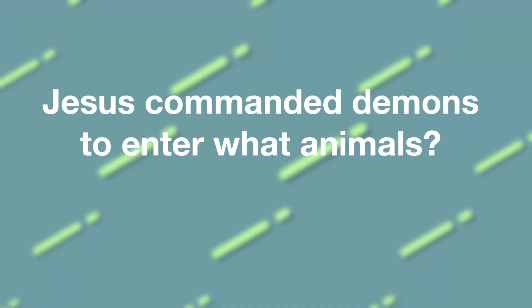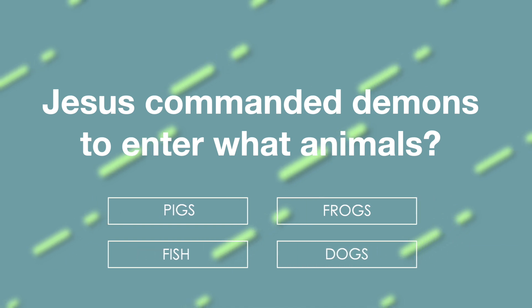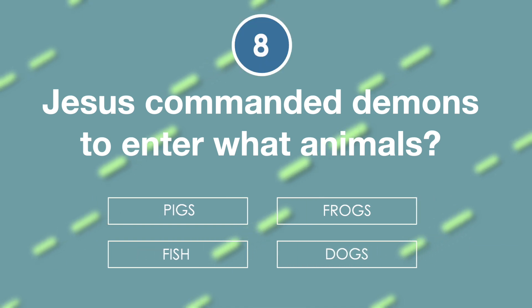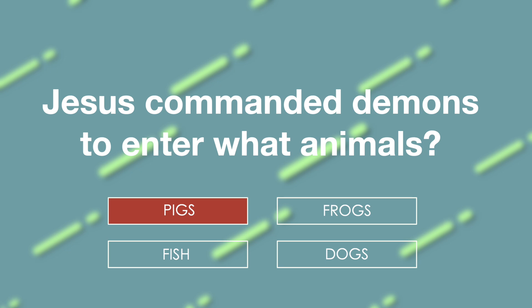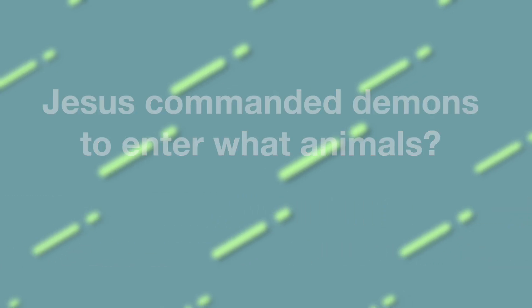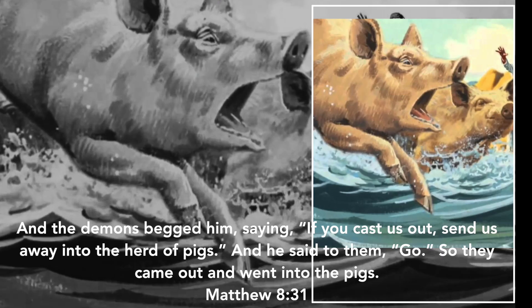Jesus commanded demons to enter what animals? Is it pigs, frogs, fish, or dogs? The answer is pigs. 'And the demons begged him, saying, If you cast us out, send us away into the herd of pigs. And he said to them, Go. So they came out and went into the pigs.' Matthew 8:31.